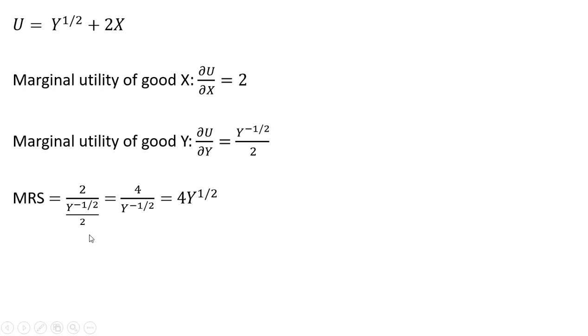So simplifying this result, multiplying the denominator through by 2 and the numerator through by 2, we get this result. Following the rules of exponents, bringing this Y to the minus 1/2 power to the numerator, we just get 4Y to the 1/2 power.